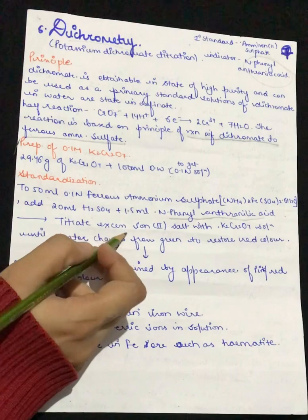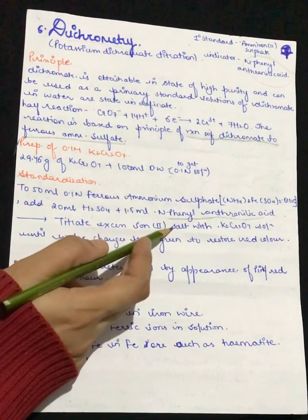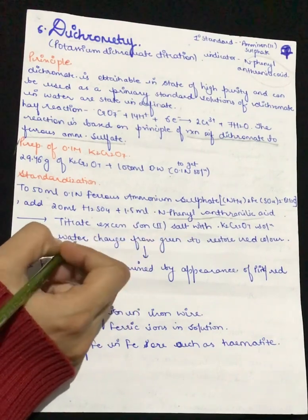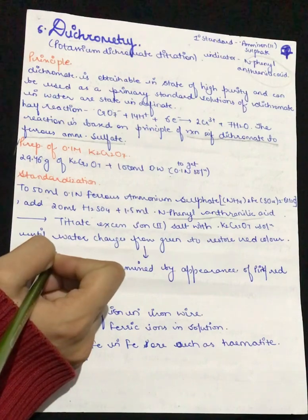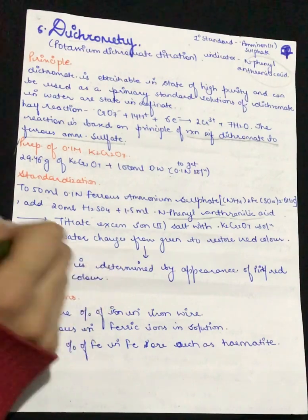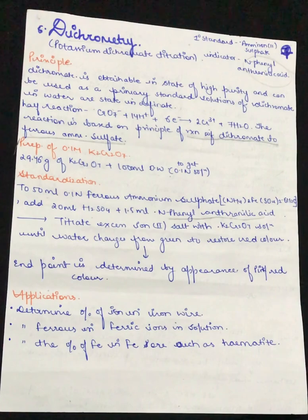Then we will be titrating the excess of the iron salt with potassium dichromate solution until the water changes from green to red color. We will titrate it against potassium dichromate until the green solution converts to red color. At the end point we will obtain the red color.